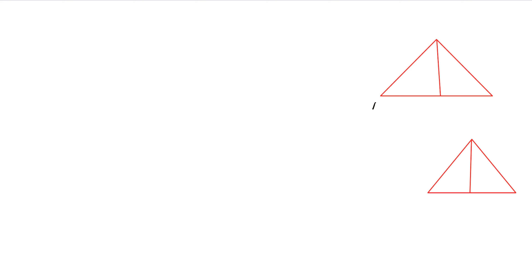Let's take a look at our two triangles and their corresponding altitudes. We have triangle ABC and triangle PQR. The altitude of triangle ABC is BL, and the altitude of triangle PQR is QM.